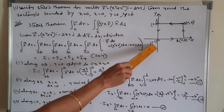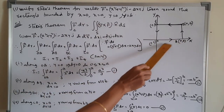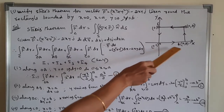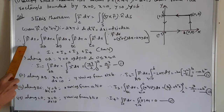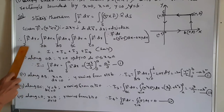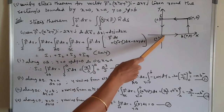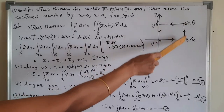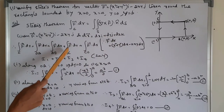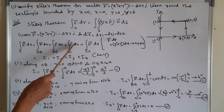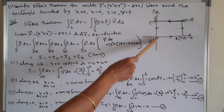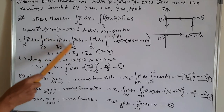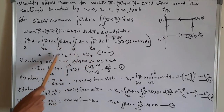We are getting the rectangle with vertices O, A, B, C, O. Therefore, the integral of F̄ · dr over C equals the sum of integrals along OA, AB, BC, and CO — that is, I1 + I2 + I3 + I4. We have to calculate each one.